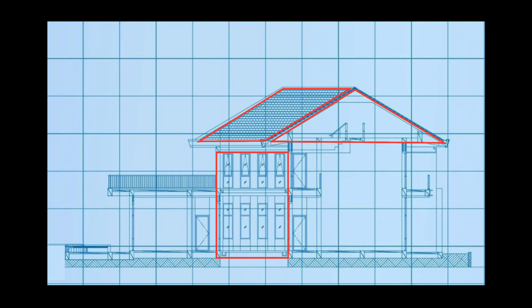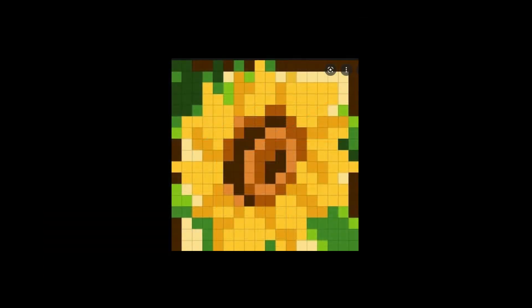Architectural software is an example of computer-assisted design software. A raster graphic is made up of a grid of small squares called pixels. Each pixel or square can have a specific color assigned to it. A photograph is an example of a raster image. The larger the number of pixels, the smaller their size, and the clearer the image.